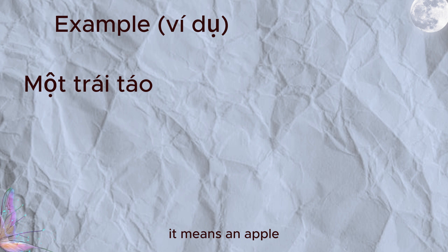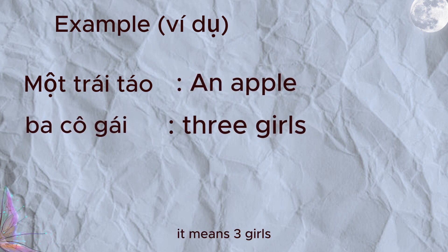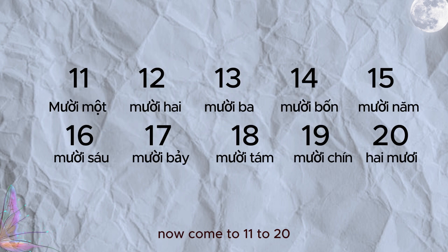Một trái táo, that means one apple. Ba cô gái, that means three girls. Now come to 11 to 20.